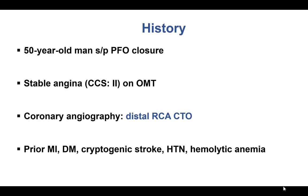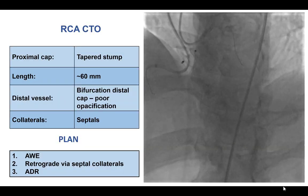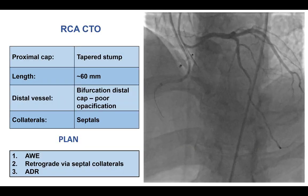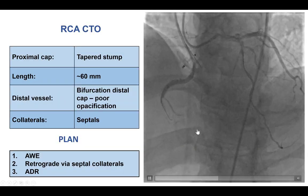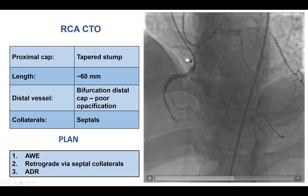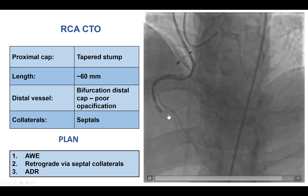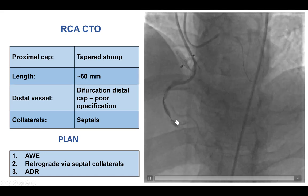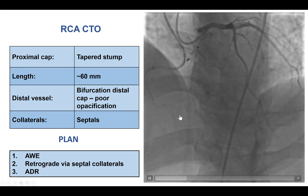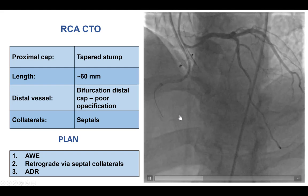The patient was a young man who presented with stable angina. He had a recent PFO closure and was found to have a distal right coronary artery chronic total occlusion. This is the PFO device. He did have a distal right coronary artery CTO with a tapered proximal cap.